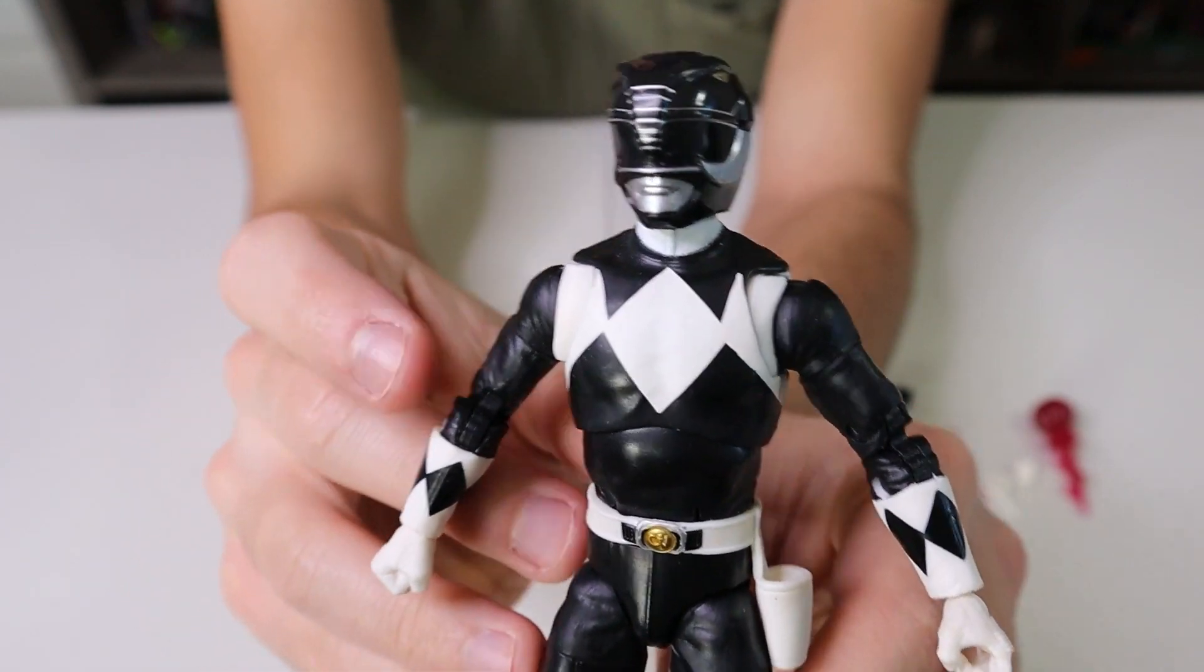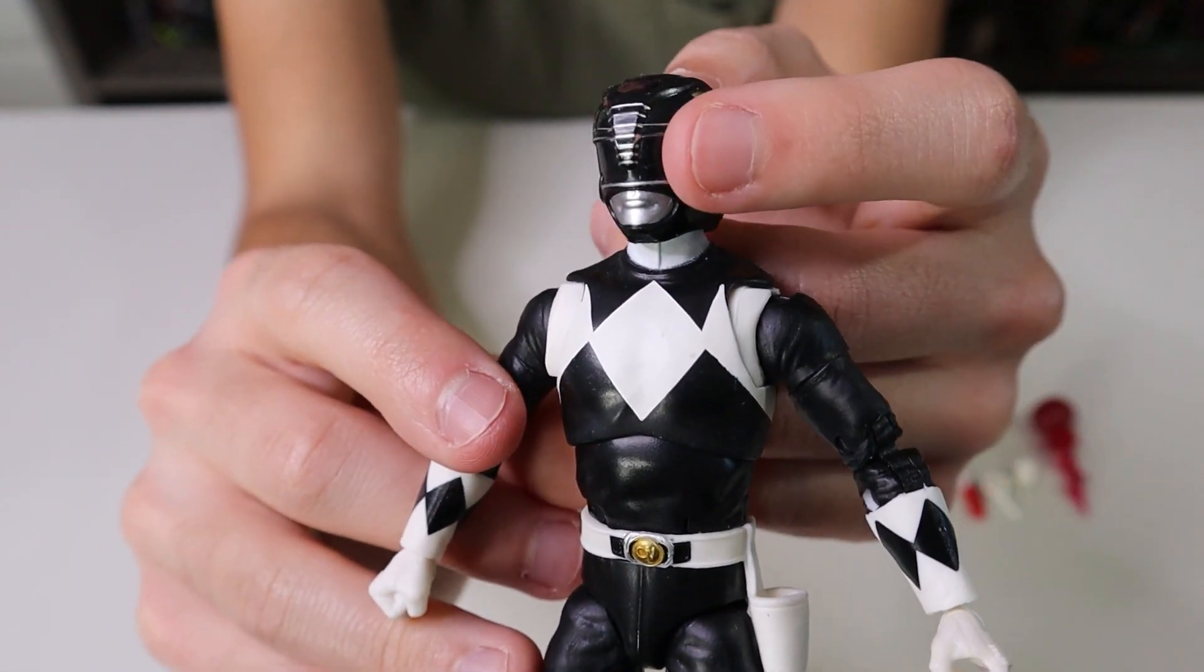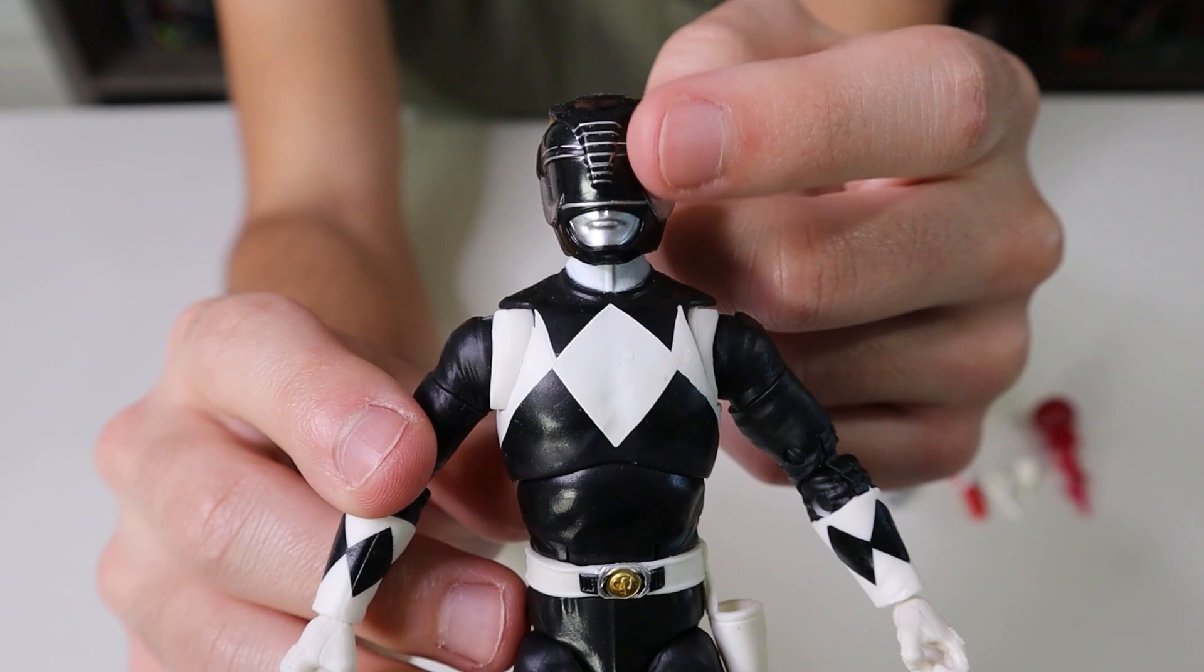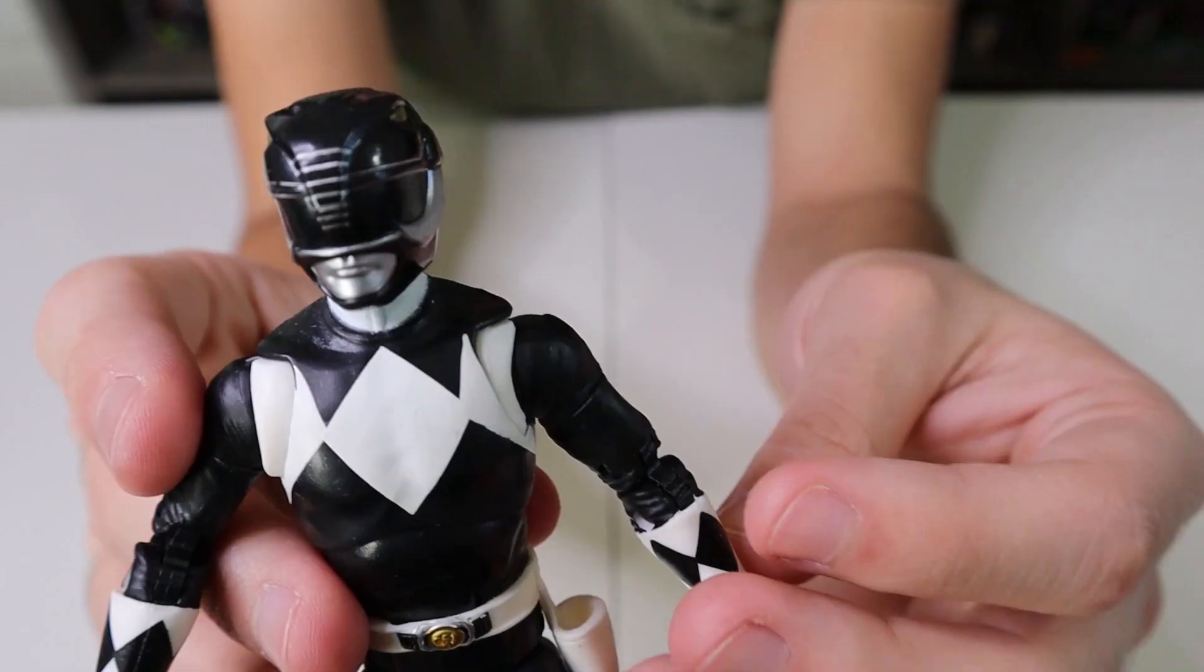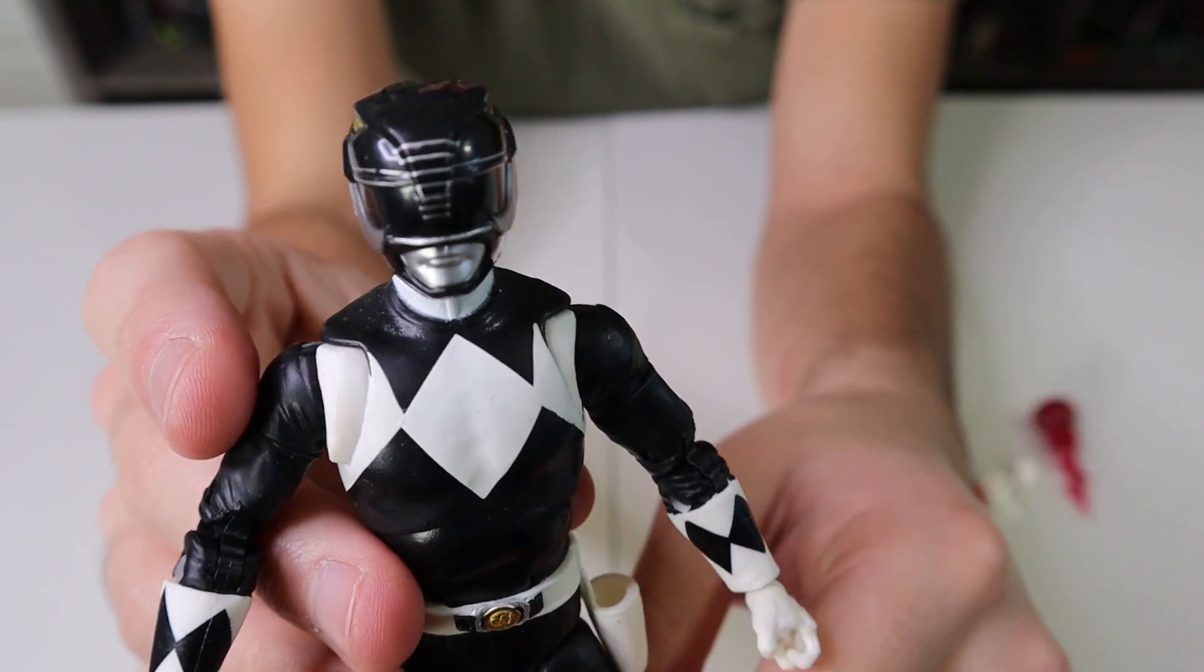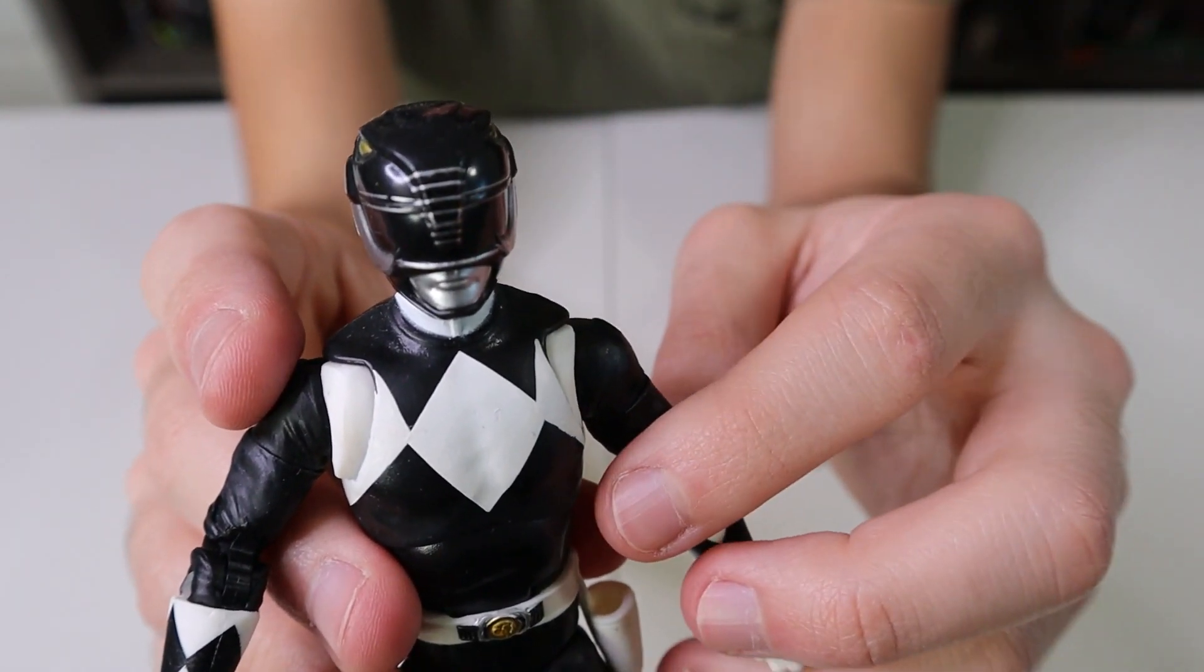One thing that I did notice on the back of the box, he does not actually have these silver lines in the grooves on his helmet. These little silver lines that go down the mastodon's trunk, those are actually not on him on the box. I'm not sure which one necessarily looks better in my opinion, but I do like the look of his helmet right here.